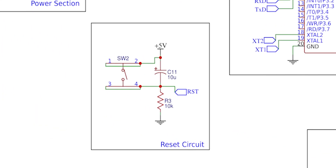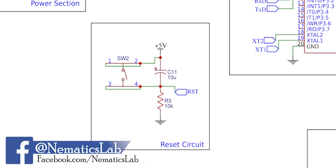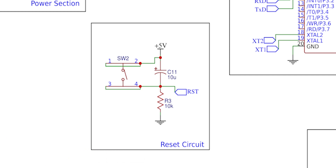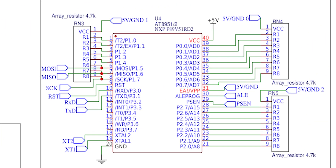Lastly, we have the reset section. Here we use a combination of a capacitor, resistor, and a switch. The resistor acts as a pull-down resistor, and whenever the switch is pressed it gives 5V at that joint, which connects to the reset pin of our microcontroller, thus resetting it. One more optional thing you can add is a 4.7 kΩ resistor network which acts as a pull-up network.